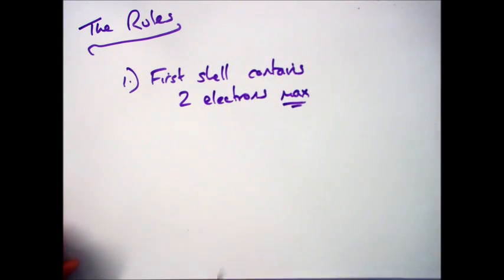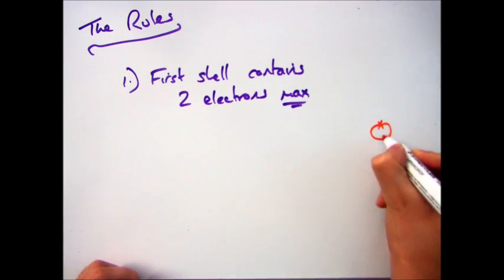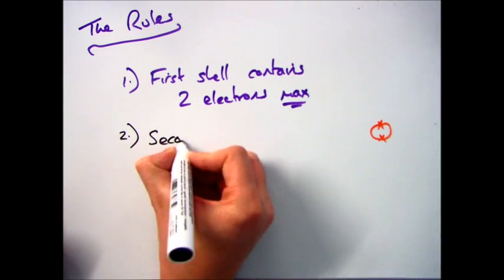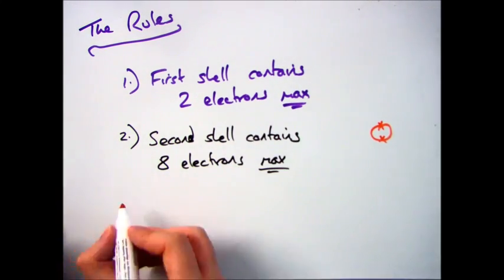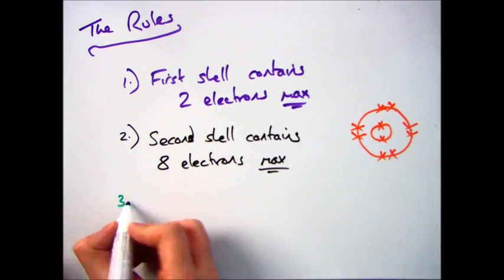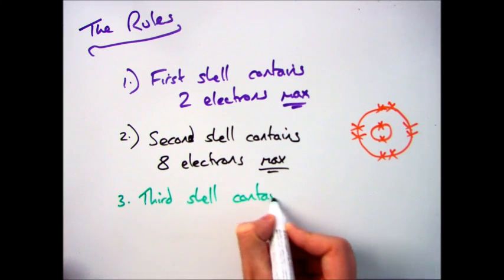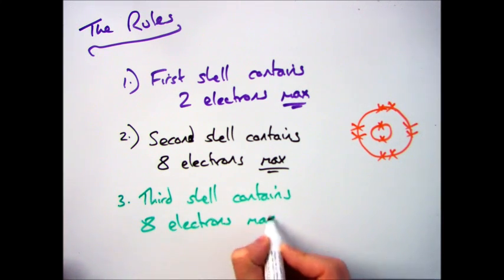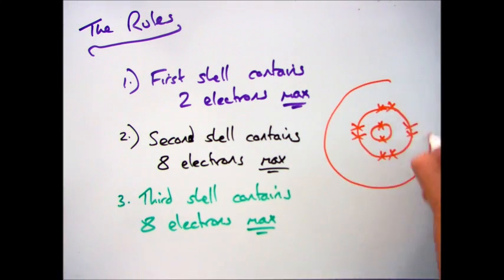The very first shell can hold a maximum of two electrons, as you can see here, and the second shell can hold a maximum of eight electrons, which you can see here. And the final shell you need to know about for GCSE is the third shell, which also contains eight electrons. So that is two in the first, eight in the second, eight in the third.